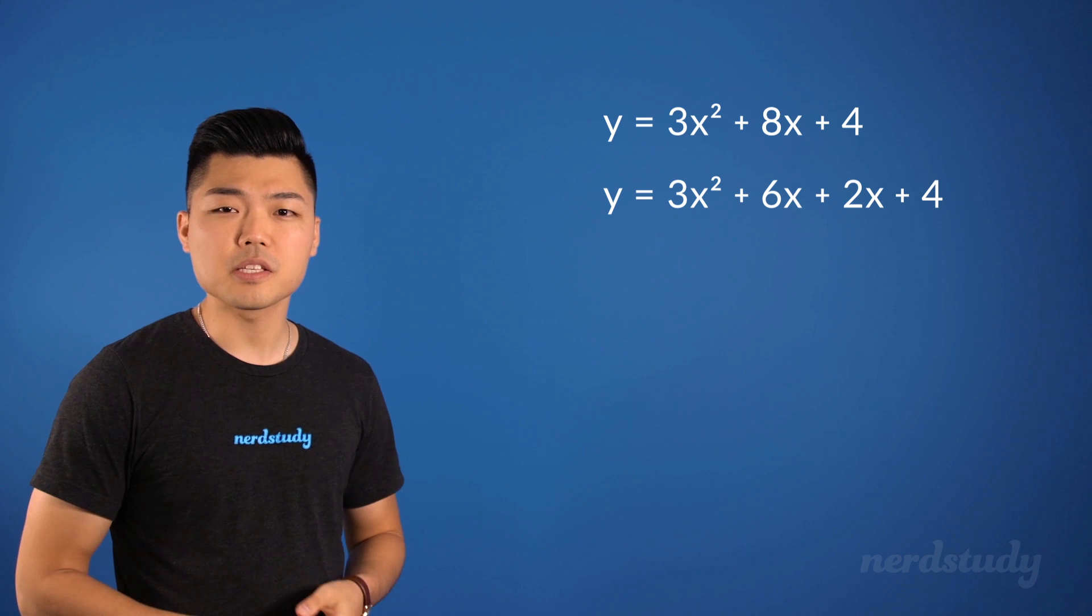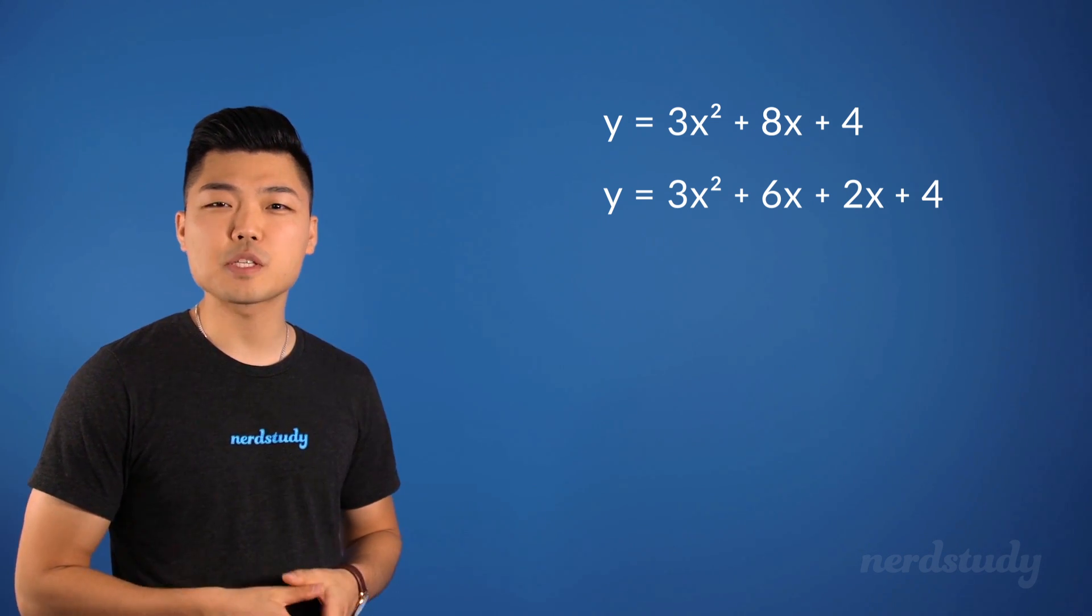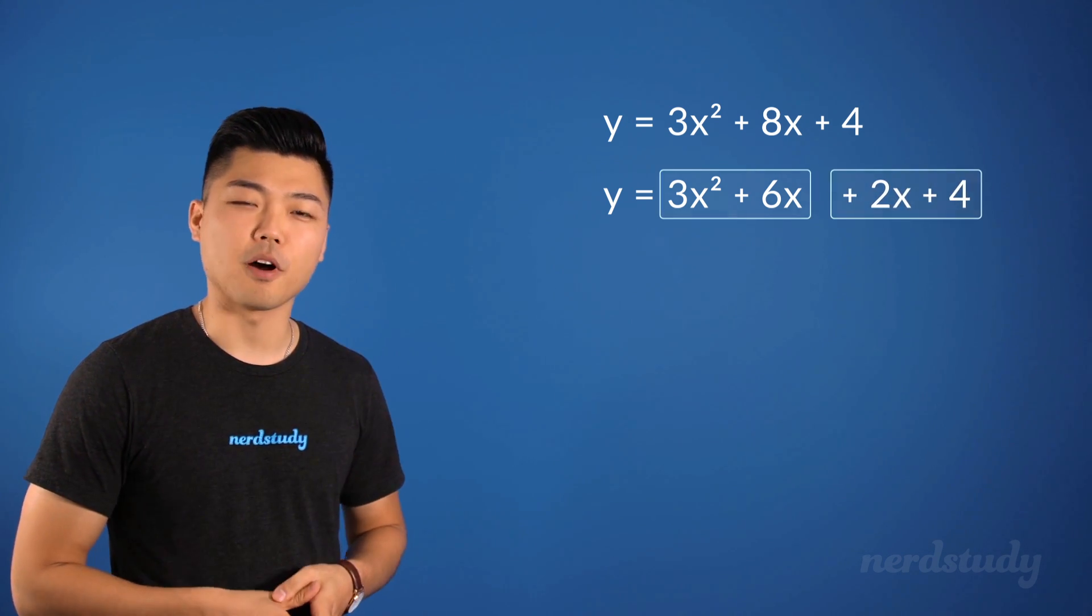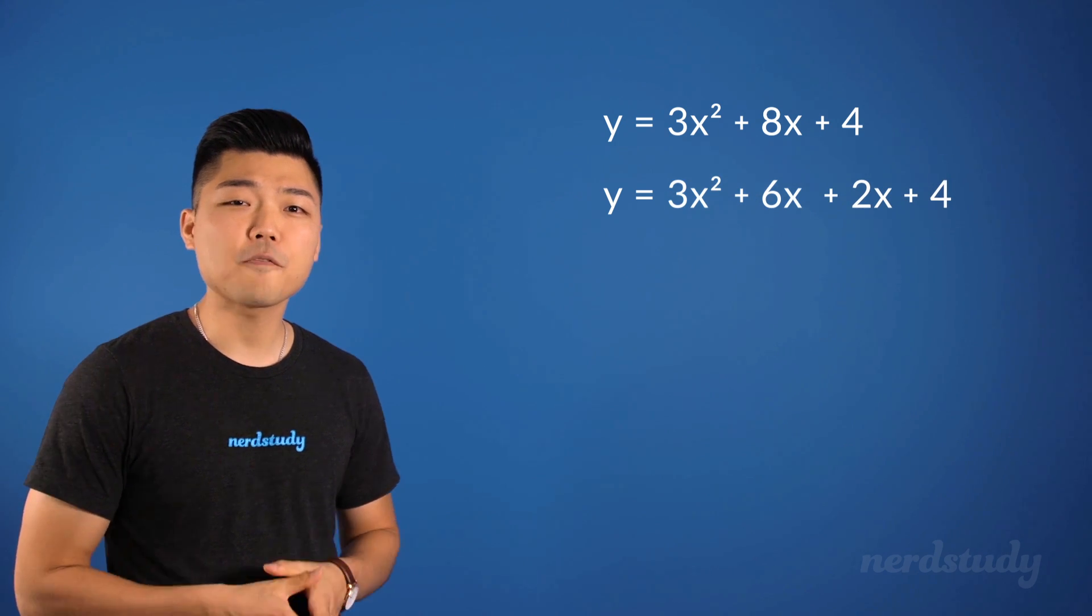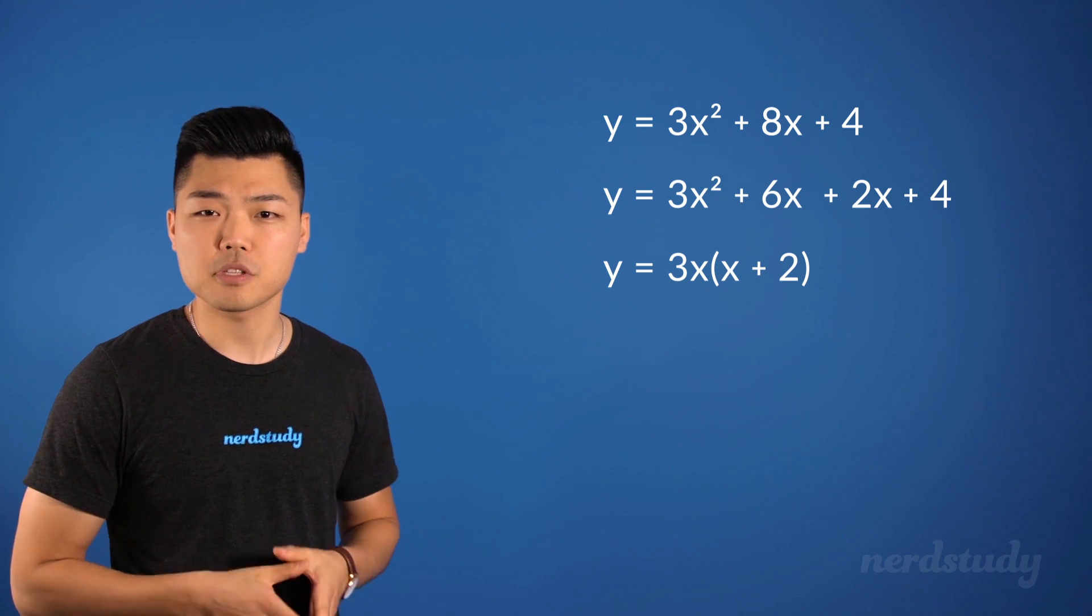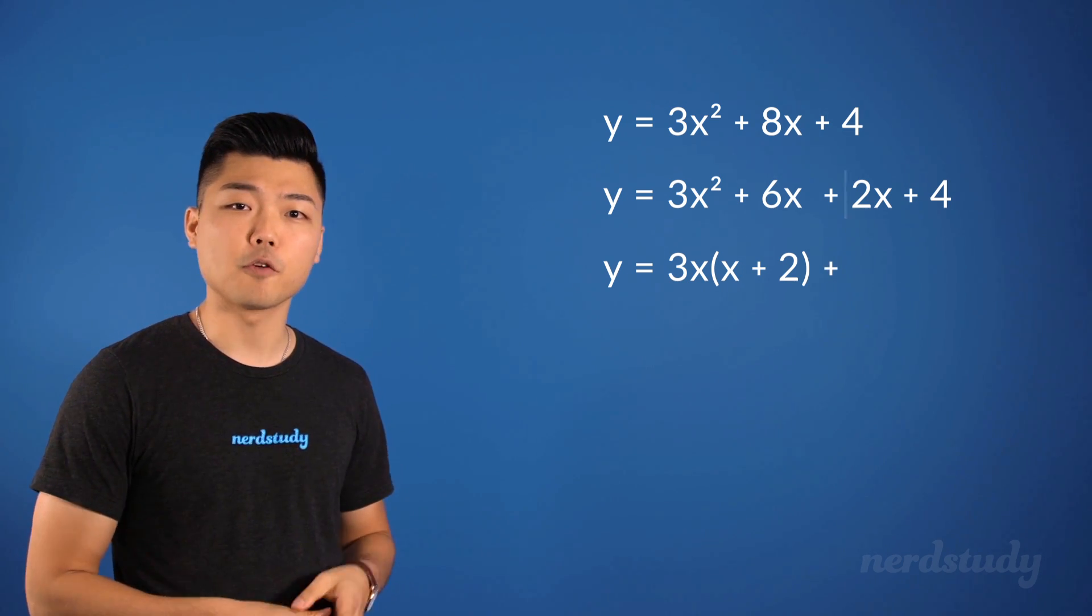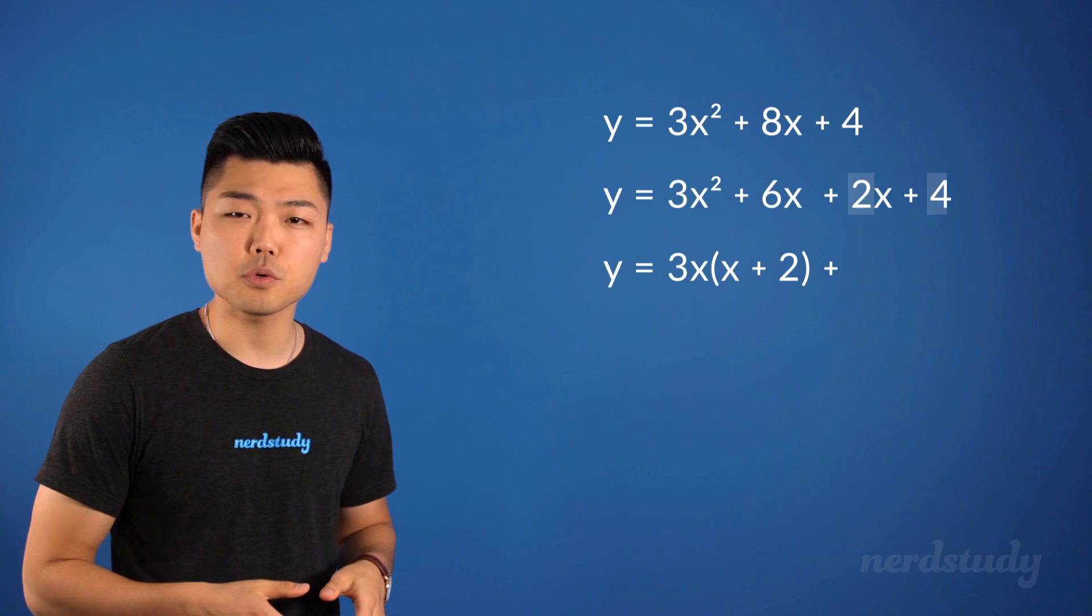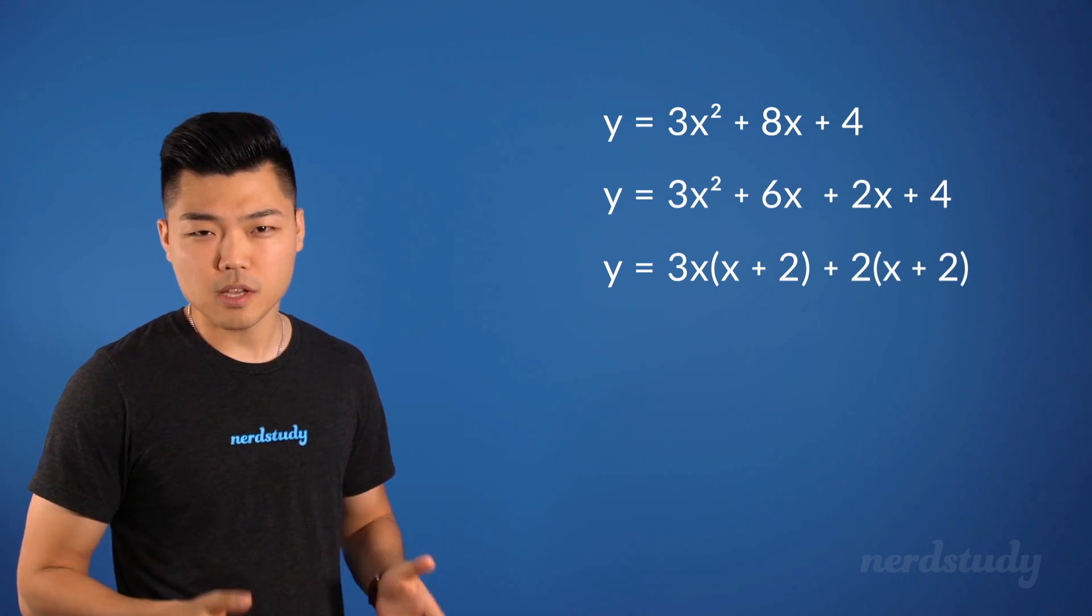Now what we can do is see this equation as being split into these two parts. From here, we can factor out the 3x from this part to get 3x times x plus 2, plus, and then over here, factor out a 2 to get 2 times x plus 2.